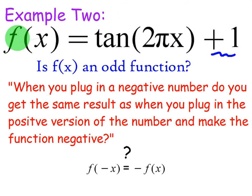This is example number two of determining whether or not a function is odd. Here we have f of x with trig functions, specifically f of x equals tangent of 2 pi x plus 1.